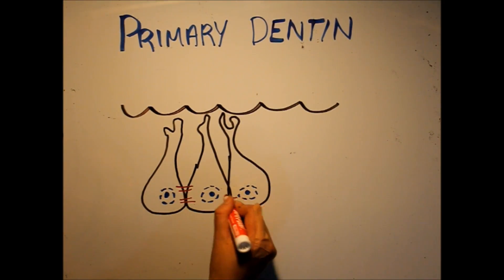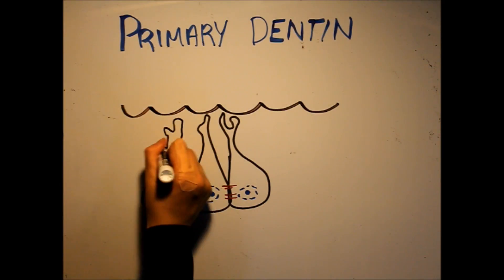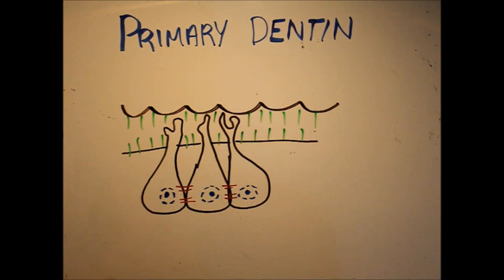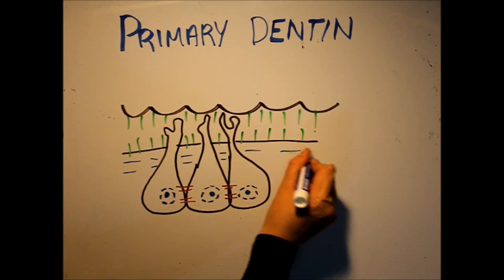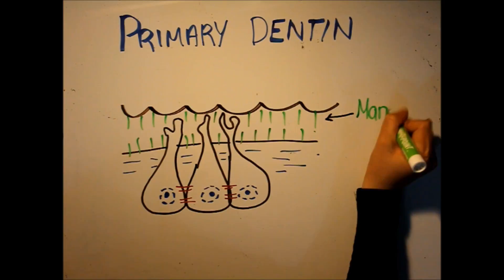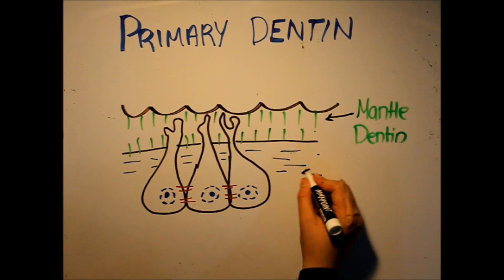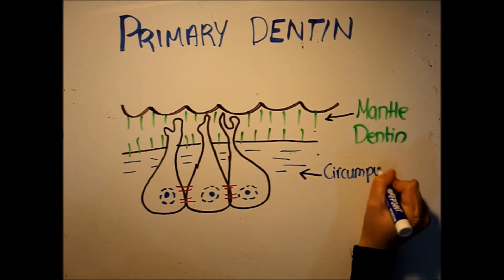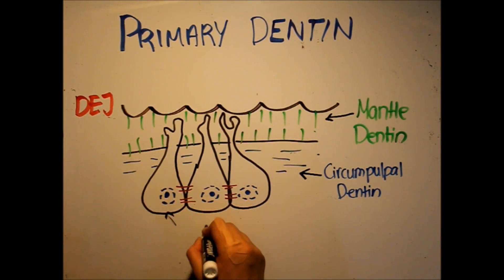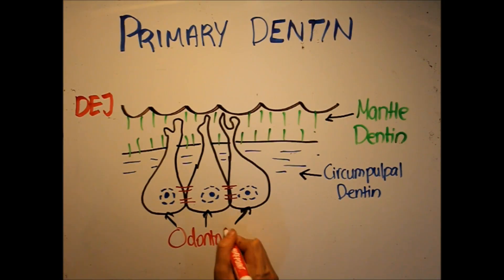As for its location, primary dentin can be found either outlining the pulp, named circumpalpal dentin, which makes up the majority of the dentin, or at the outermost layer of dentin, named mantel dentin. The difference between circumpalpal and mantel dentin is not only in their location, but also in the orientation of their collagen fibers. While circumpalpal collagen fibers are parallel to the dentino-enamel junction, the collagen fibers in mantel dentin are oriented perpendicular to the dentino-enamel junction.